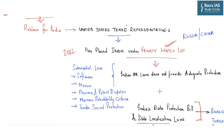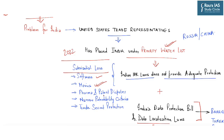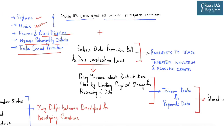India has been placed under the priority watch list of the United States because, according to the United States, Indian IPR laws do not provide adequate protection, and this has resulted in substantial loss for American companies. There are not adequate protections with respect to filing of patents for software, copyright issues for Hollywood movies, pharmaceutical products and various patent disputes, narrow patentability criteria according to the United States, and the issue of trade secret protection in India. The United States also believes that India's data protection bill, currently under the purview of the Joint Parliamentary Committee, and data localization laws of India are barriers to trade and threaten innovation and economic growth.